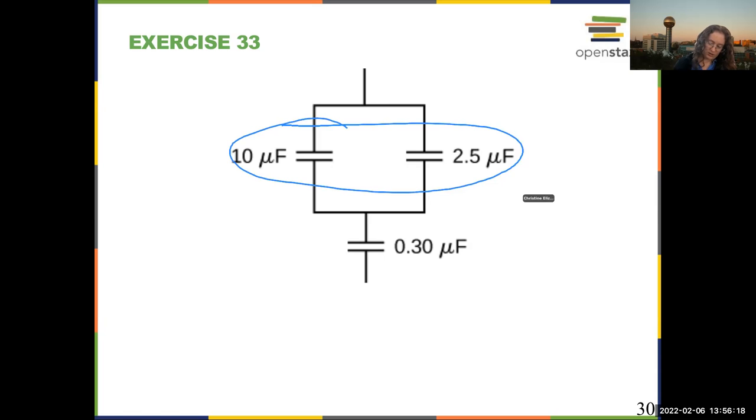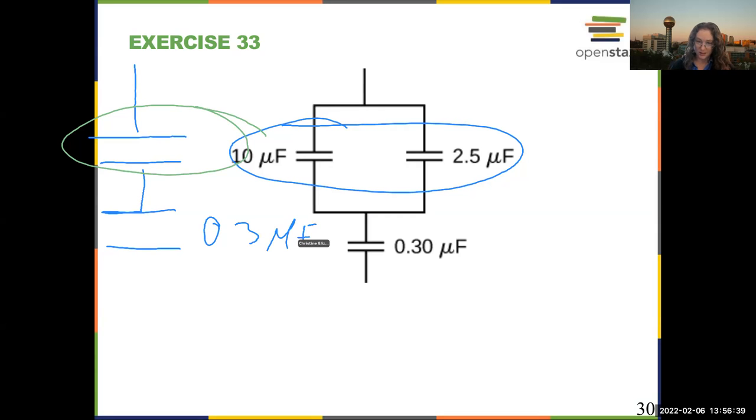All right, for more complicated circuits. So here I'm going to first combine these two and that leaves me with this circuit. So these guys go to this right here. Okay, so then I still have a 0.3 microfarad capacitor here because I didn't touch it. And then these guys right there, capacitors in parallel add. So this is a 12.5 microfarad effective capacitor.